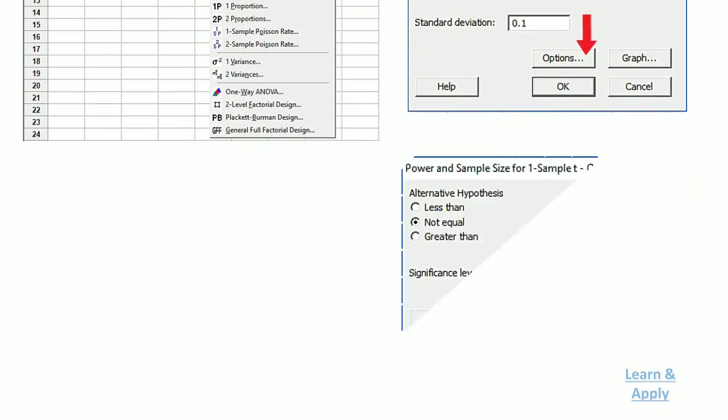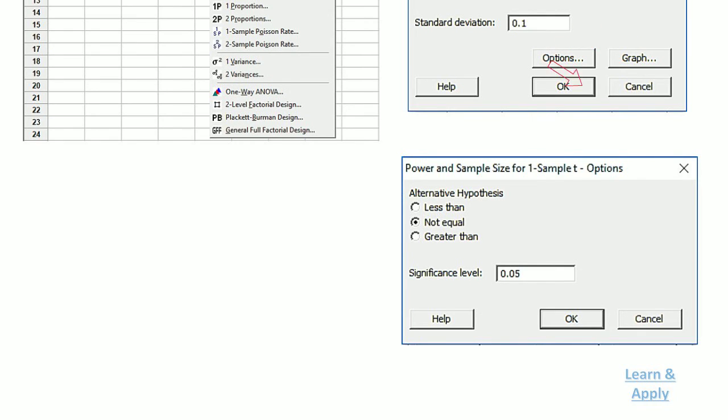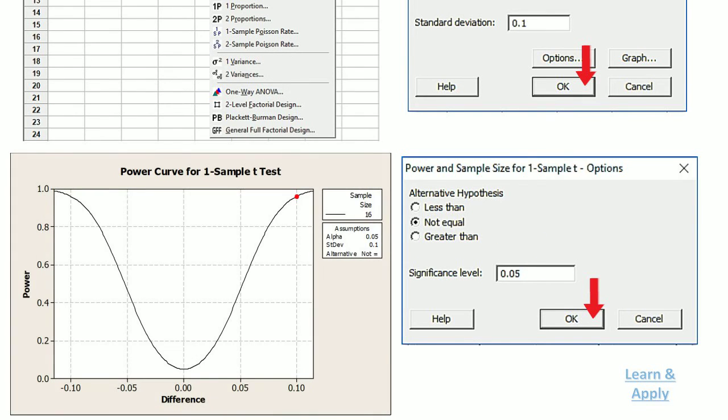Fifth, click Options. Sixth, in alternative hypothesis, select not equal. Seventh, click OK in the dialog box to get the results. You will get the sample size as 16.